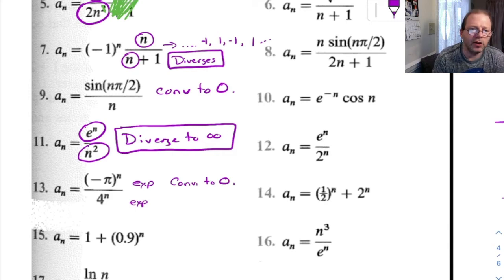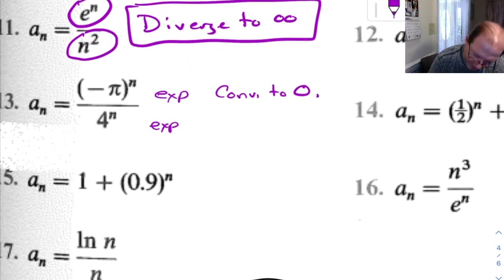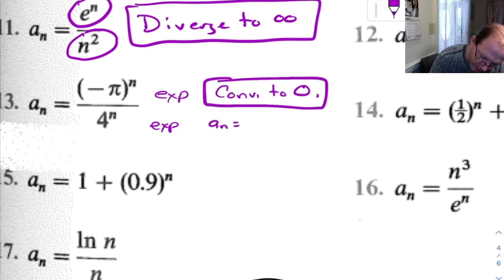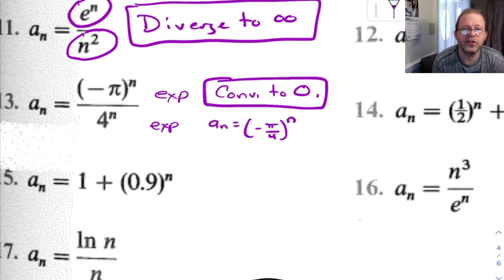Now, another way you could look at that is you could say, well, a sub n here, I could rewrite that as negative pi over 4 to the n. And if you think about what happens, pi over 4, pi over 4 is less than 1. So when you start raising it to powers, it's going to shrink. So this is going to converge to 0.